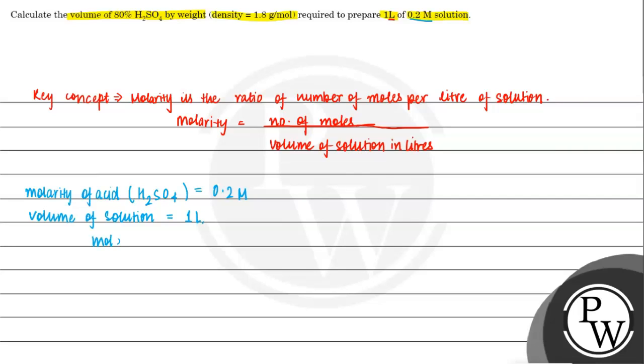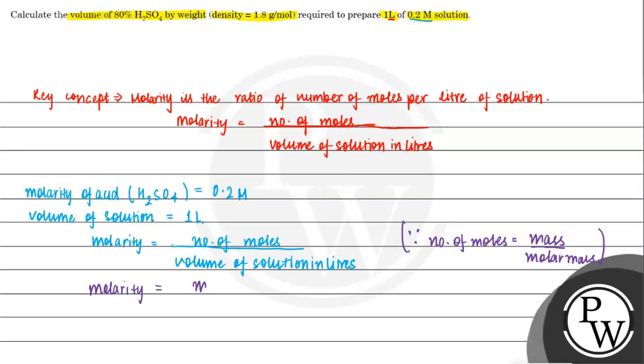We will use molarity formula, which is number of moles given by volume of solution in liters. We know that the number of moles, calculate the number of moles. So we will substitute this to the formula. So now the formula is mass divided by molar mass divided by volume of solution in liters.